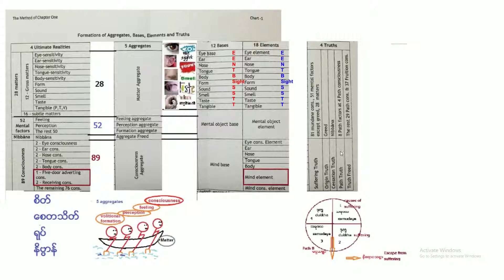So there are four truths. Suffering truth is Pannatti, origin truth is Pannatti, cessation truth is Nibbana, path truth is Paramattha.